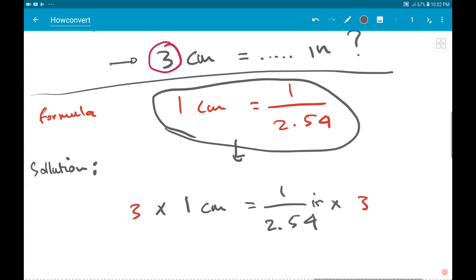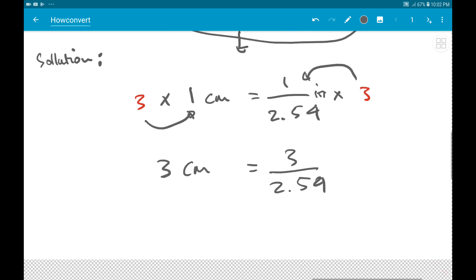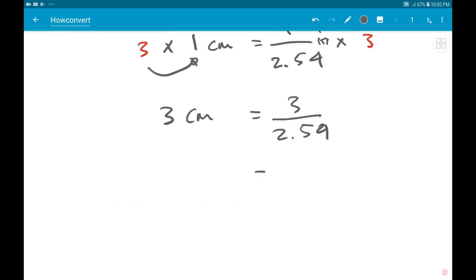We multiply here: 3 divided by 2.54. So 3 cm equals 3/2.54 inches, which equals 1.1811 inches.